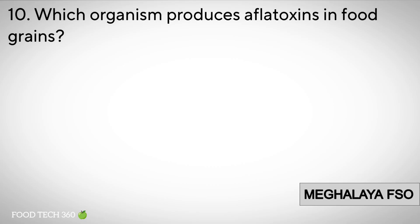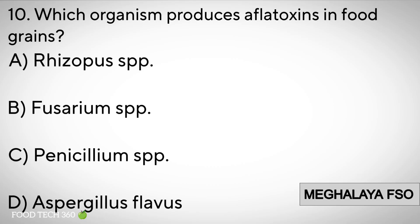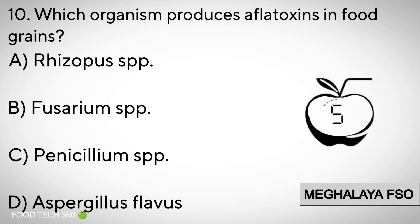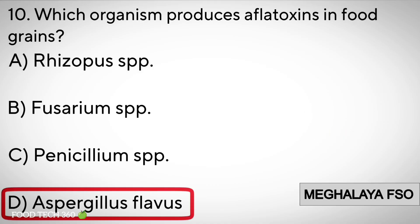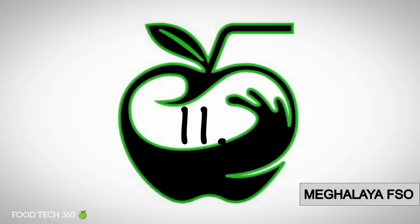Question number 10: Which organism produces aflatoxins in food grains? Options: A. Rhizopus species. B. Fusarium species. C. Penicillium species. D. Aspergillus flavus. Correct answer: D. Aspergillus flavus.